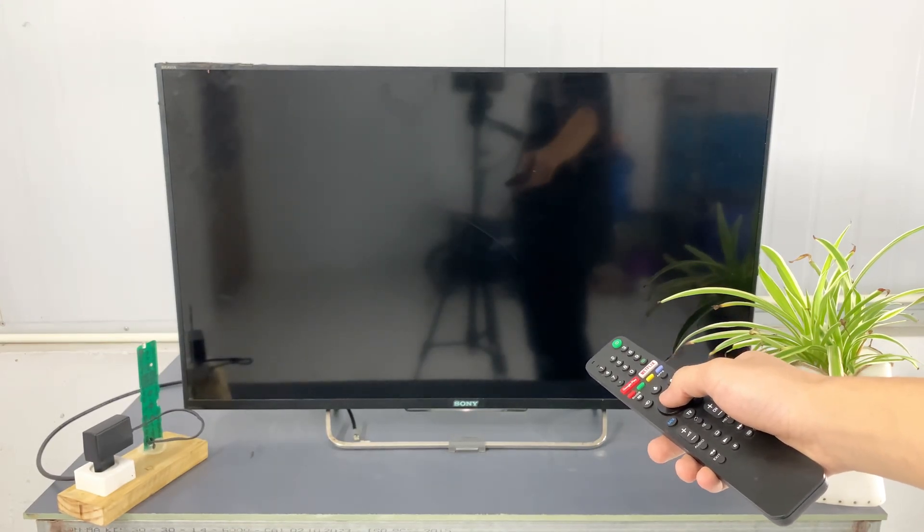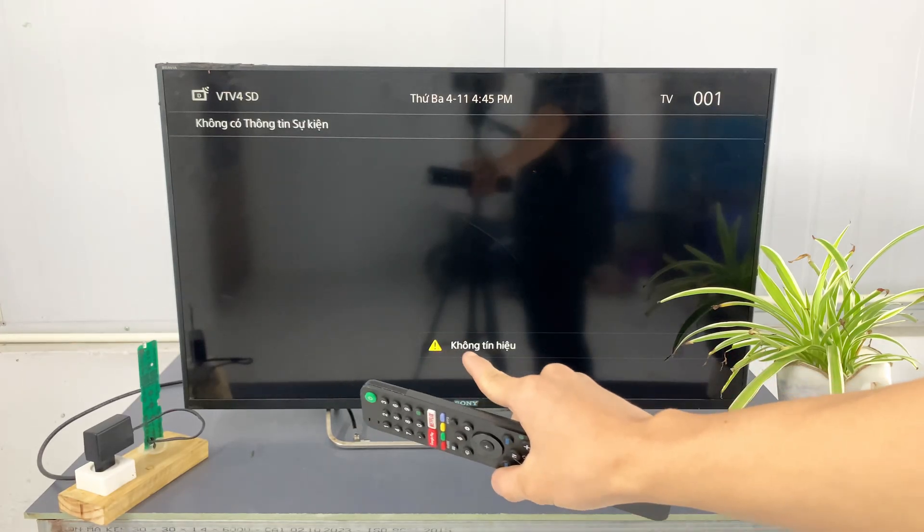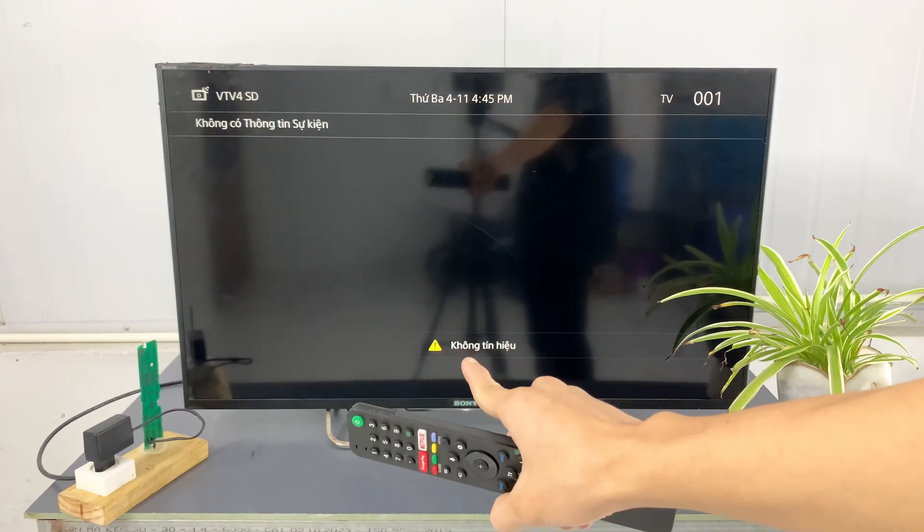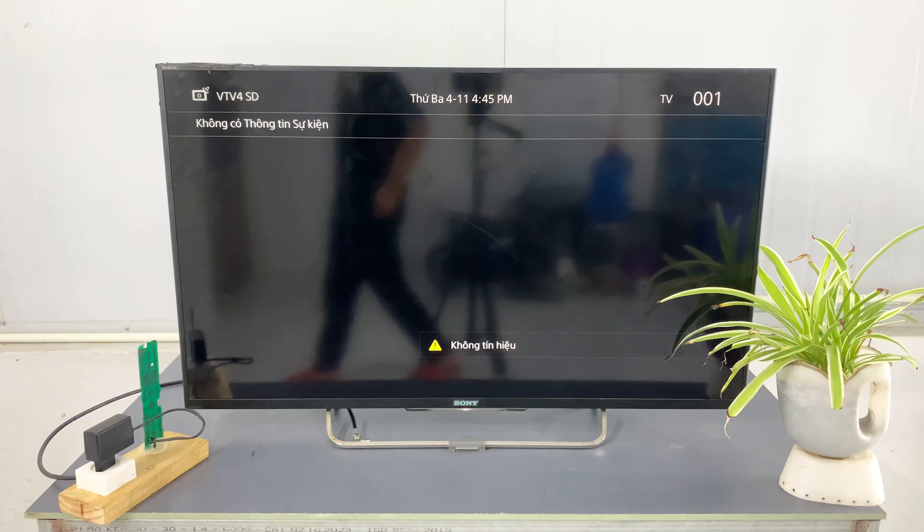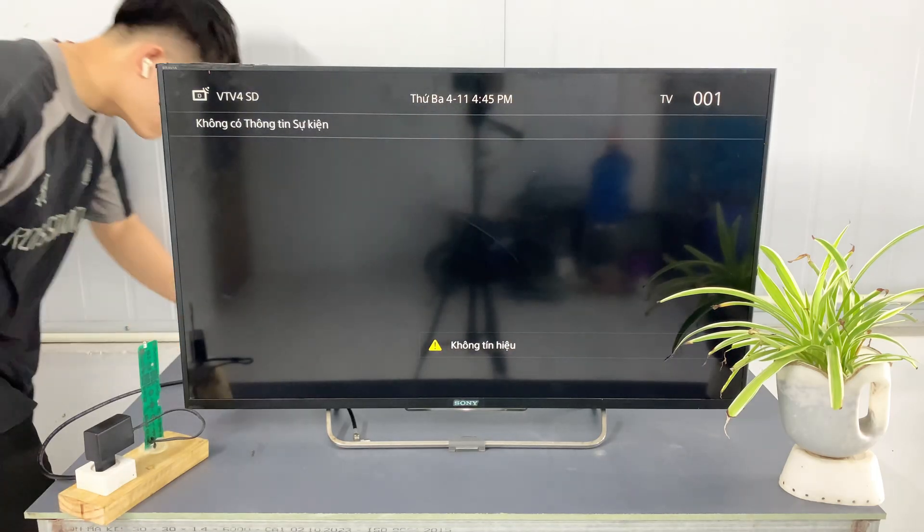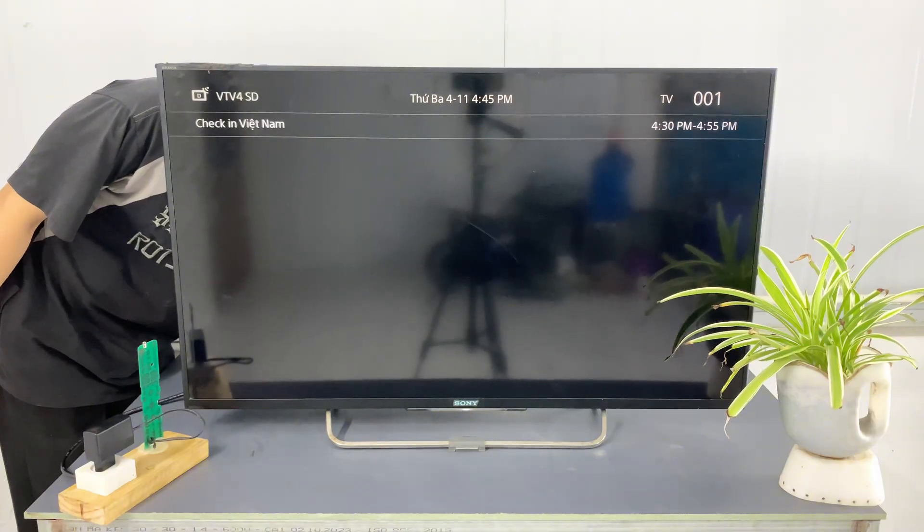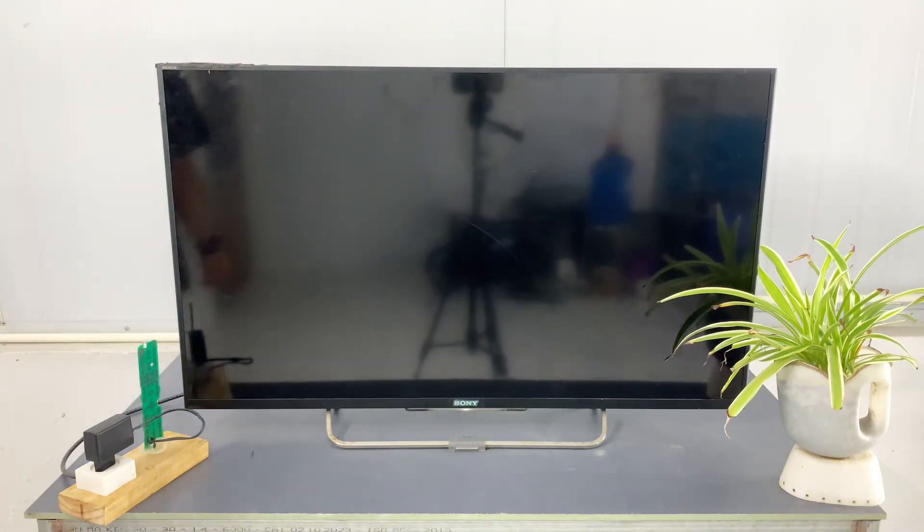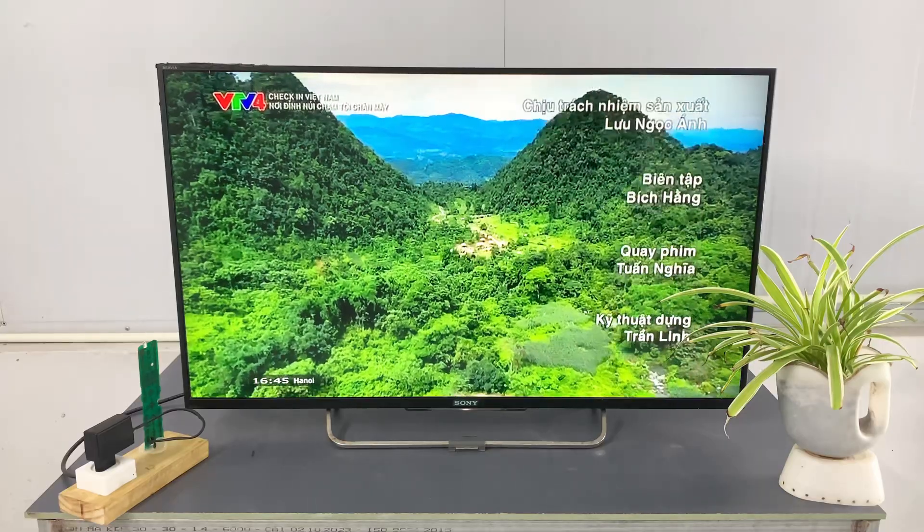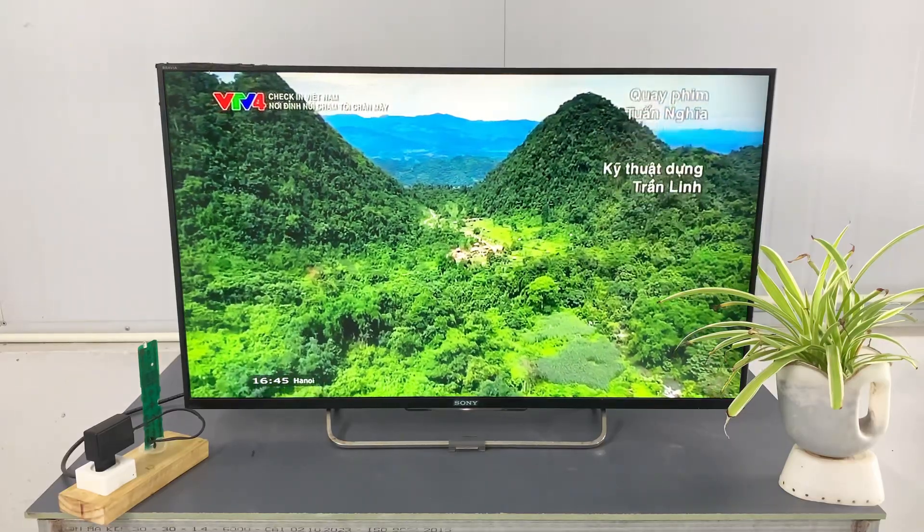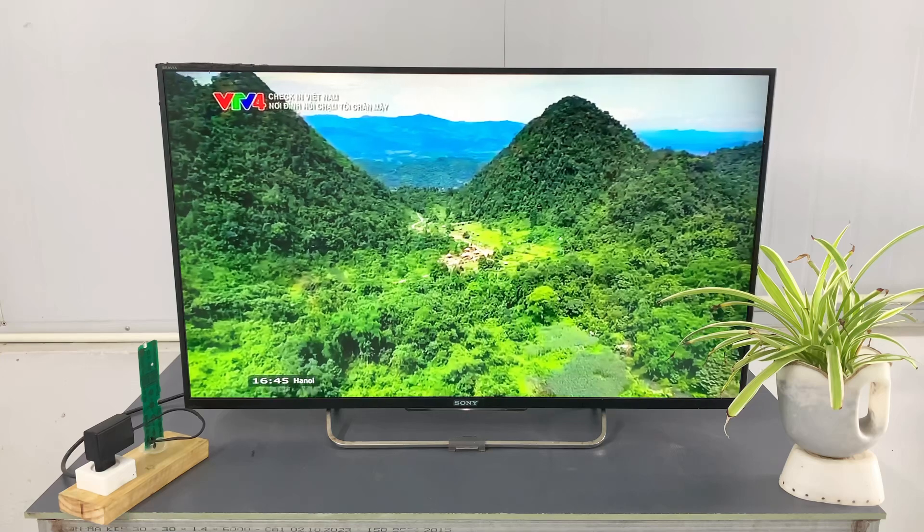As you can see, my TV currently shows no signal. But watch what happens when I take our newly crafted antenna. I'm going to connect the coaxial cable from our new antenna system directly into the antenna input on the back of my TV. Instant signal. This is incredible, right? From a broken remote control to a fully functional TV antenna.